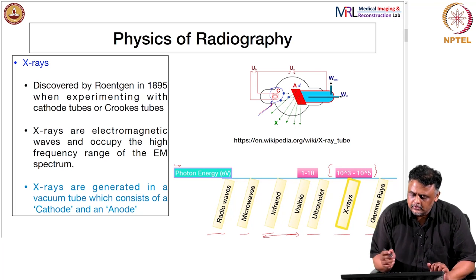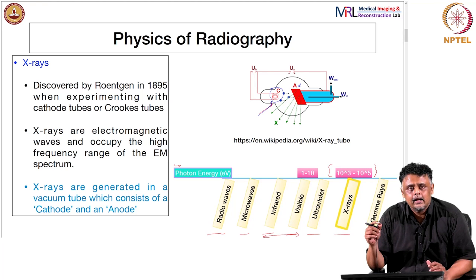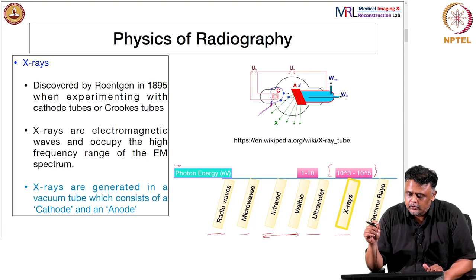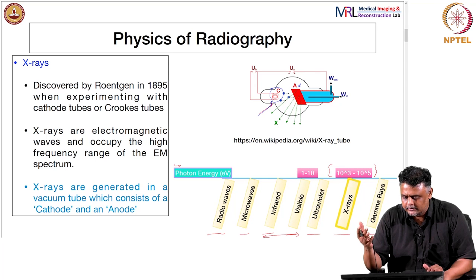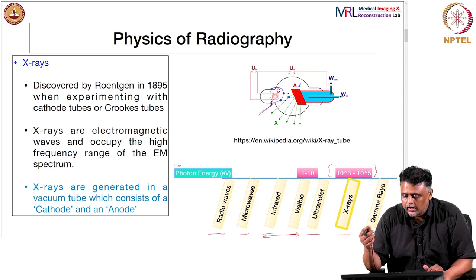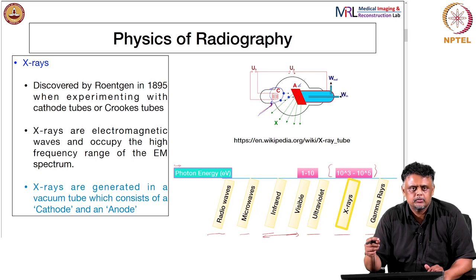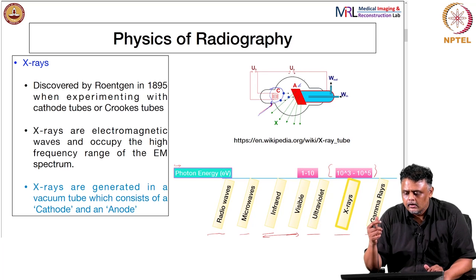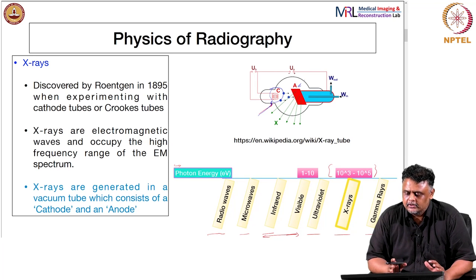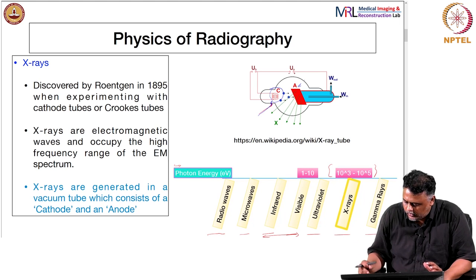All electrons emitted by the cathode are accelerated and focused to hit a spot on the anode target. The size of this spot has an impact on the resolution of the final image. In many reconstruction techniques, the idealization is made that x-rays come from a point source, but this is not strictly true. For a clinical x-ray tube, the spot size is of the order of 0.2 to 0.5 millimeters. This is a qualitative look at these imaging systems.